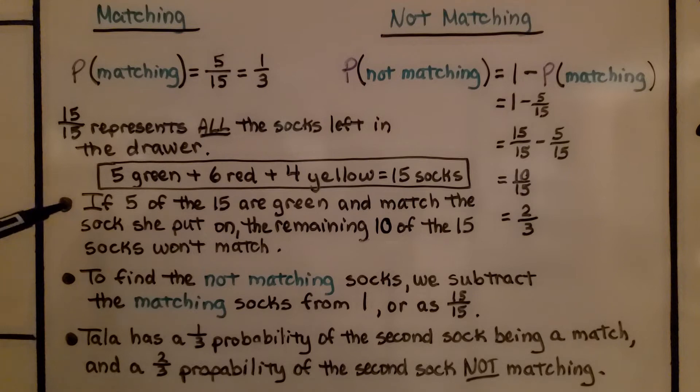If five of the fifteen are green and match the socks she put on, the remaining ten of the fifteen socks won't match. That's the two thirds.